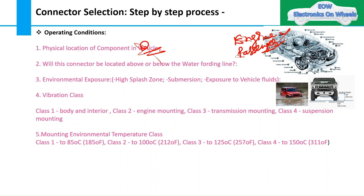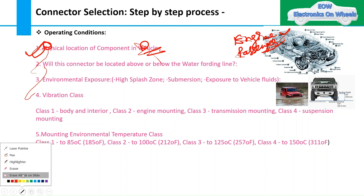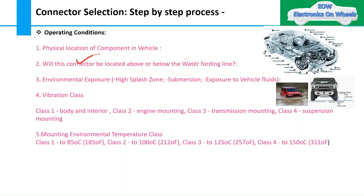The physical location also tells you what type of mounting and packaging to apply. The second consideration is whether the connector is located above or below the water wading line. If it is below the wading line, it is in the wet area and requires extra protection. Above the wading line — such as in the passenger compartment — is considered a dry area.